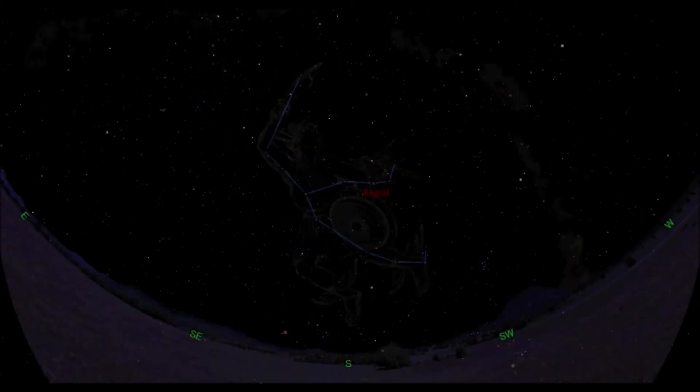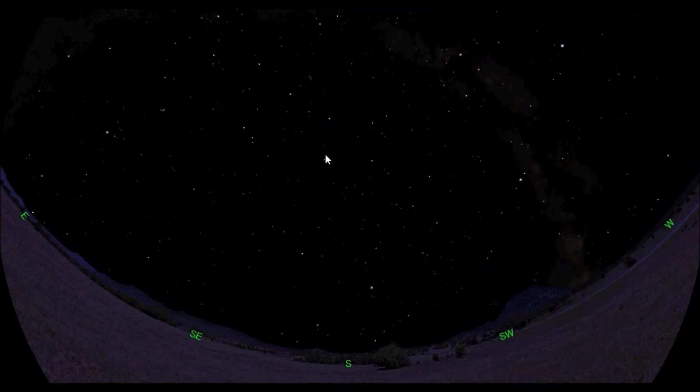All right, so if we go back to a blank sky, here's the square of Pegasus. Follow this line of Andromeda until you run into here, and then these stars right here are Perseus with the bright star Algol.